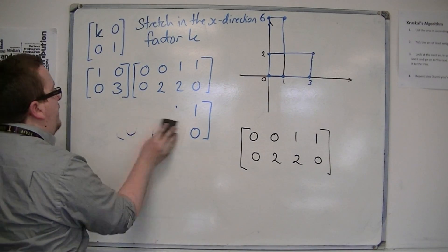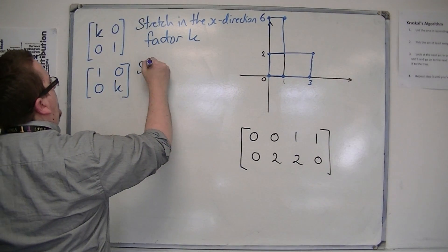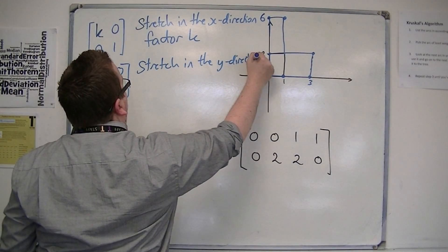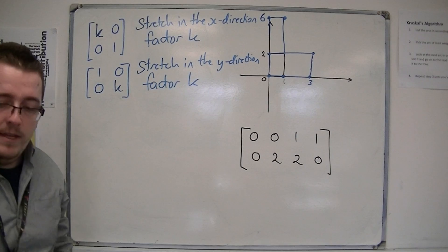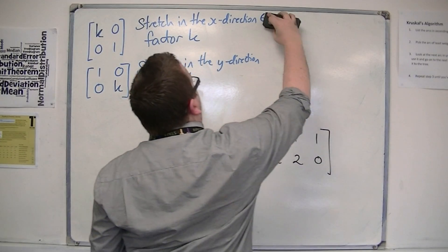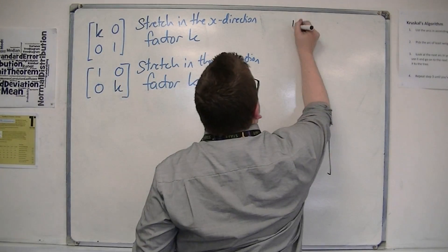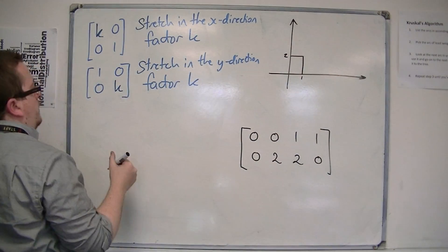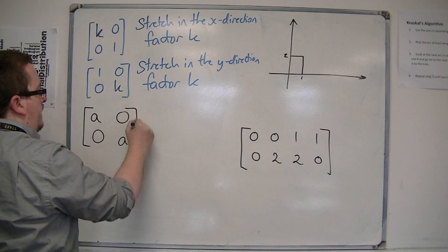We can generalise this matrix as well. The matrix [1,0;0,k] gives a stretch in the y-direction by factor k. Now, what I want to show you is what happens when I multiply by the matrix [A,0;0,A].